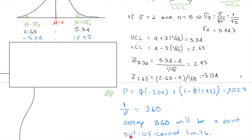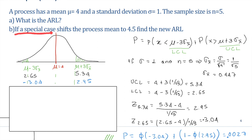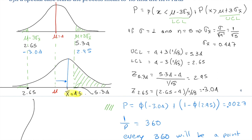The ARL is 1 over p, which equals 360. That means every 360 samples we will find a point that is out of the control limits. In this example we are asked to look at a special case that shifts the process mean by 4.5, so we need to find the new ARL. The mean is shifted but the limits remain the same.